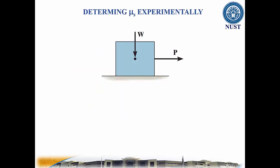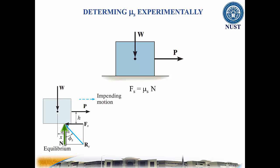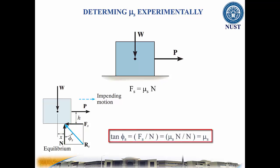If the block just begins to slip, the maximum static friction force is given by this equation. When the block is on the verge of sliding, the normal force N and friction force Fs combine to create a resultant force Rs. From the figure, tan(phi_S) equals the ratio of Fs to the normal force, which is further equal to the static coefficient of friction.